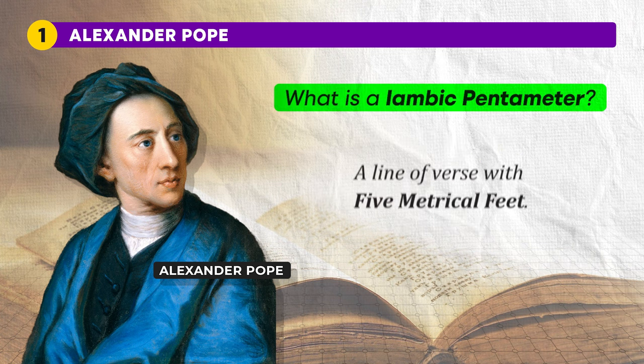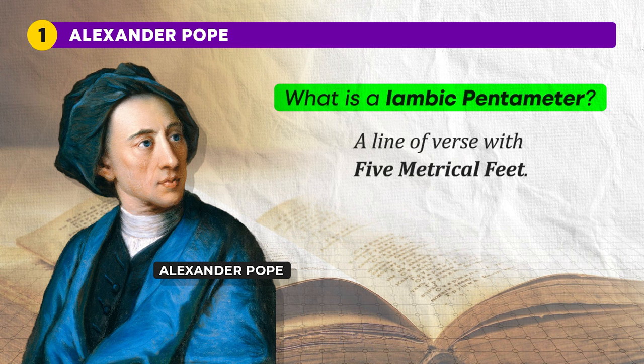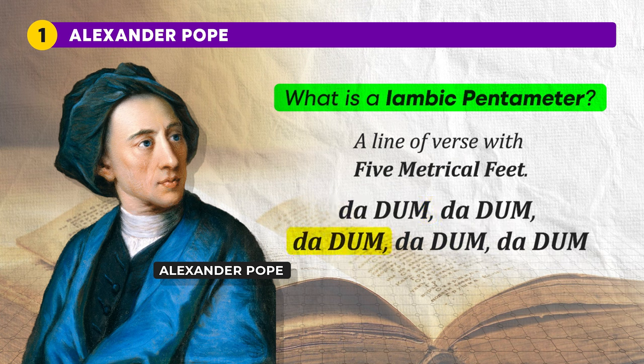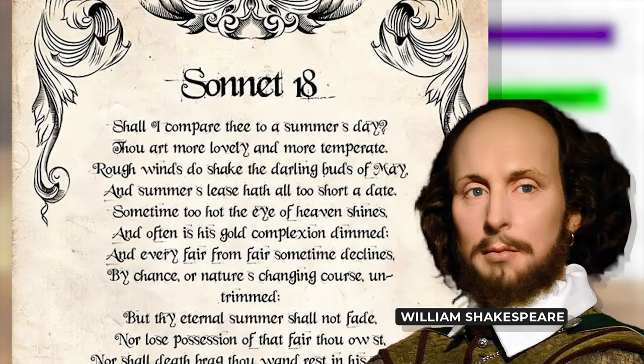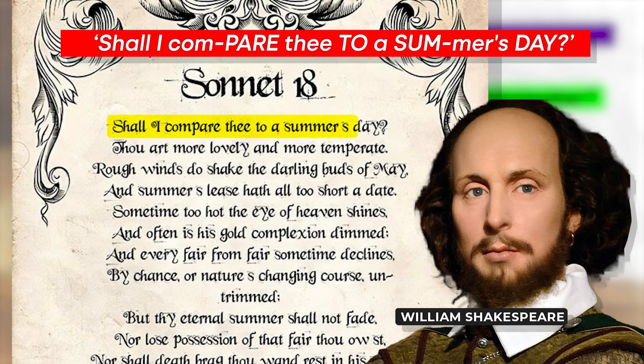A heroic couplet is a rhyming couplet — two lines of poetry written in iambic pentameter. An iambic pentameter is a line of verse with five metrical feet, each consisting of one short or unstressed syllable followed by one long or stressed syllable, sounding like da-dum, da-dum, da-dum, da-dum, da-dum. An example is Shakespeare's Sonnet 18: 'Shall I compare thee to a summer's day?' Each beat follows the da-dum pattern, and when you do this pattern five times in a line, it's called an iambic pentameter.